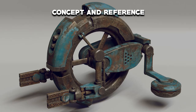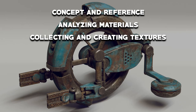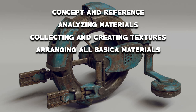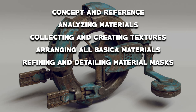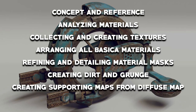The main steps that should guide your project are: first, concept and reference — you need to be very sure about the end result you're going for. Next, analyze your reference and determine what kinds of different materials you're going to need. Then prepare the textures by searching resources or making them yourself. After that, arrange all the different materials according to how they're built in real life. Then refine your material masks, capturing the characteristics of the material — this is also where you create different types of damage. Next, create what's on top of the material: the dirt, grunge, and grime. After that, generate all supporting maps such as roughness and bump from the diffuse map. The last step is rendering, where you set up appropriate lighting and adjust the shader to get the final look.